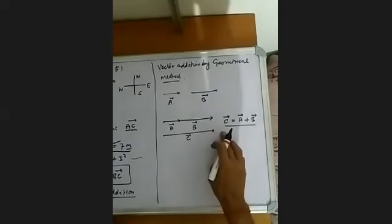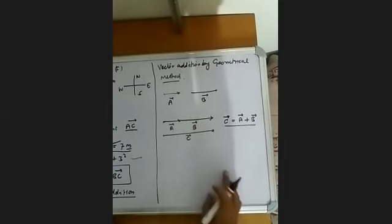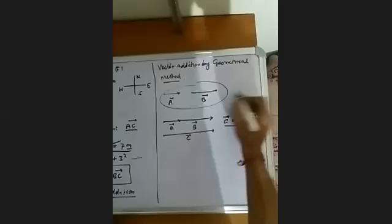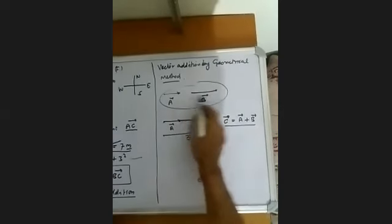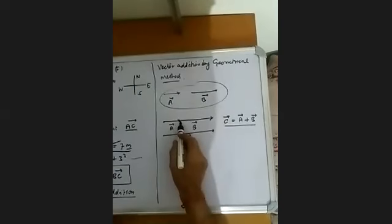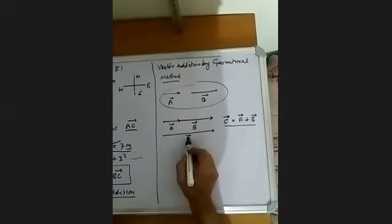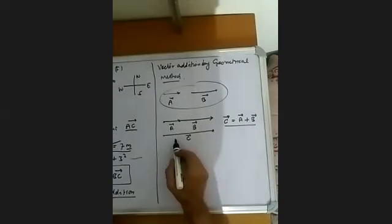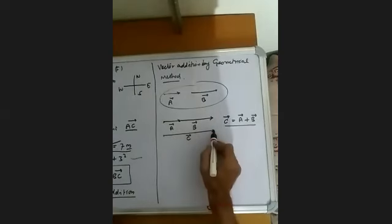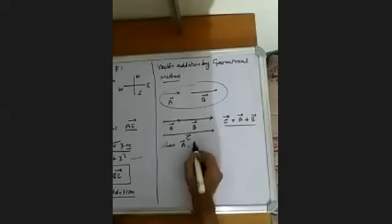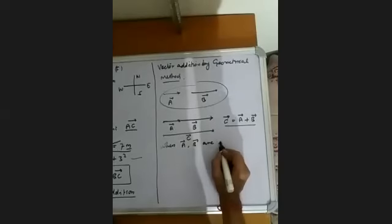So we added two vectors which are in the same direction. We first draw the first vector, and after that we join the tail of the second vector with the head of the first vector and draw the second vector. The resultant is the vector that starts from the tail of the first vector to the head of the second vector. This is the case when vector A and vector B are in the same direction.